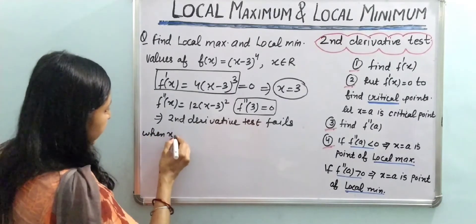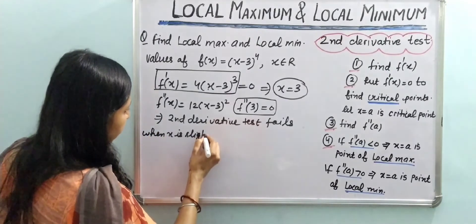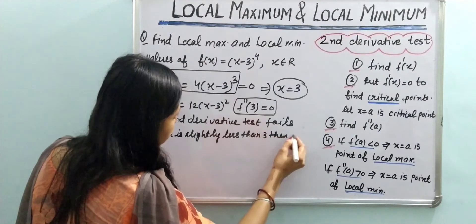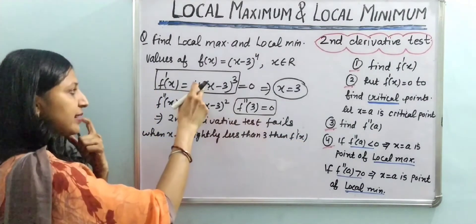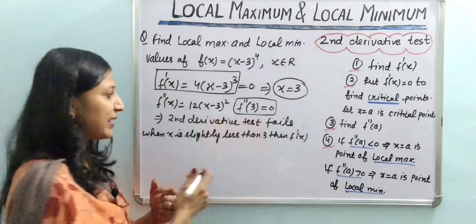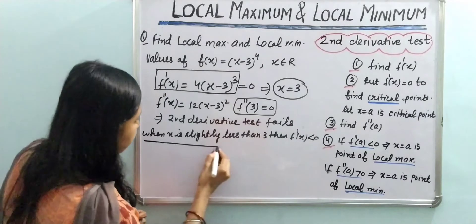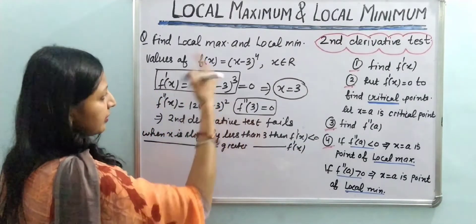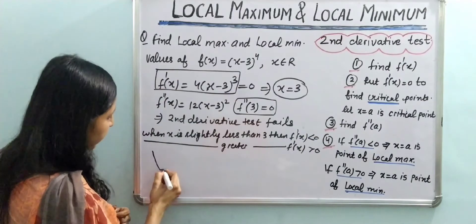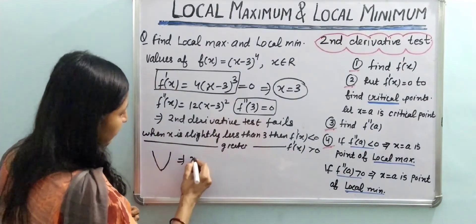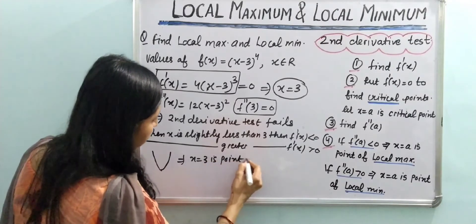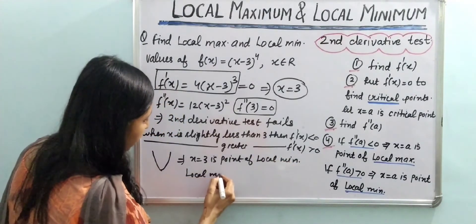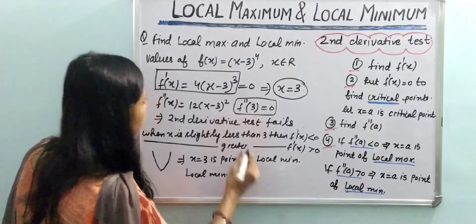Using the first derivative test at x = 3: when x is slightly less than 3, the difference (x - 3) is negative, and its odd power is also negative, so f'(x) < 0. When x is slightly greater than 3, the difference is positive, so f'(x) > 0. Since f' changes from negative to positive, x = 3 is a point of local minimum, and the local minimum value is f(3) = 0.